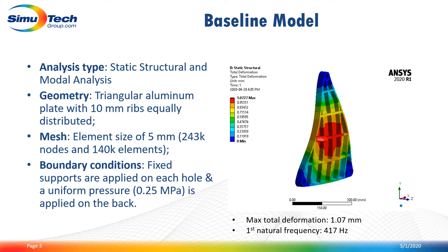Let me start by showing you the initial design, which we will call the baseline model. It's a simple geometry where 10 millimeter RIPs were equally distributed. The part is in alumina and is fixed on three holes. A uniform pressure was applied on the back, and we have done a static structural analysis as well as a modal analysis to get the natural frequencies. The main results are shown here.